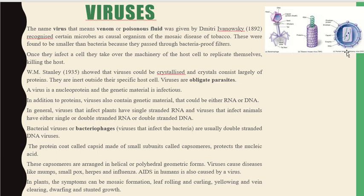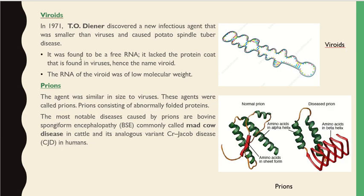In 1971, Diener discovered a new infectious agent smaller than a virus that causes potato spindle tuber disease. It was found to be free RNA — lacking a protein coat — hence the name viroid. The RNA of a viroid is of very low molecular weight. Here you can see its structure.